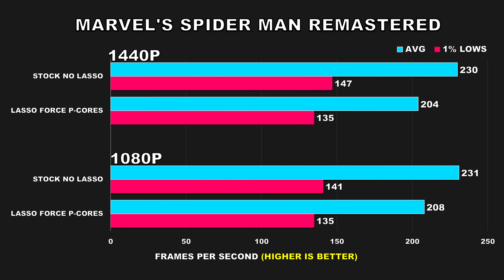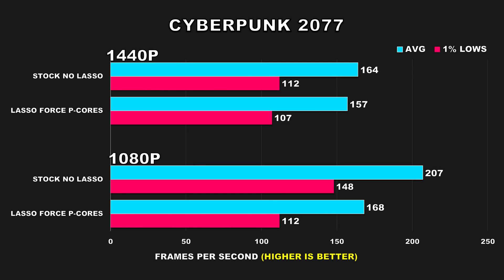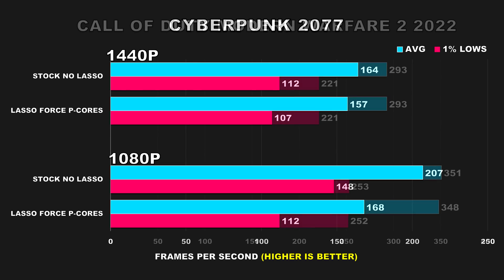Next we have Marvel's Spider-Man Remastered, and unfortunately the news isn't good. At 1080p, we're seeing approximately an 11% difference in average FPS and 4% difference in 1% lows. At 1440p, these margins actually increase to 13% and 9% respectively. Cyberpunk 2077 is another addition to our list of games with disappointing results. At 1080p, performance drops quite substantially — without Process Lasso we observed 23% better average FPS and 1% lows were 32% higher. At 1440p, being more GPU-bound narrows the margins, but there's still a noticeable performance hit.